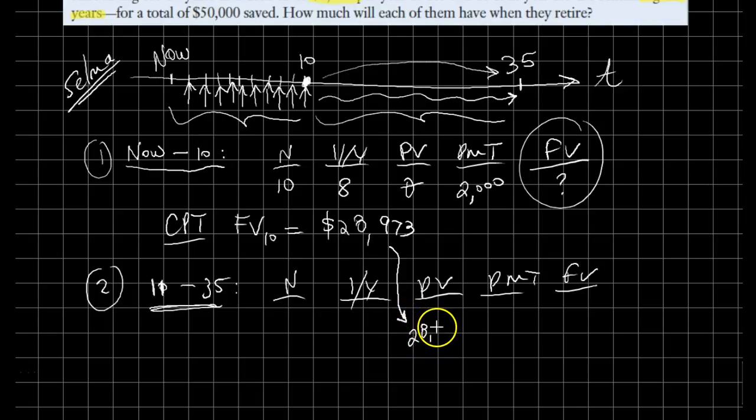$28,973, and we are curious how much it will accumulate into. We no longer deposit any fixed amount. Previously we used to deposit $2,000 each year. We have 25 more years and we still have access to 8% return on our investments.